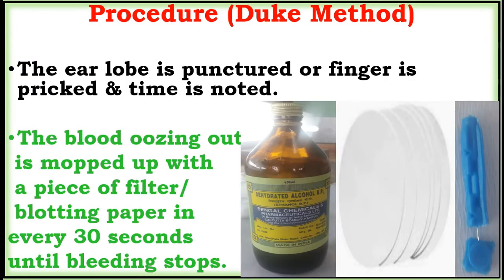The ear lobe is punctured, or the finger is pricked, and the time is noted. The blood oozing out is mopped up with a piece of filter paper or blotting paper every 30 seconds until the bleeding stops.